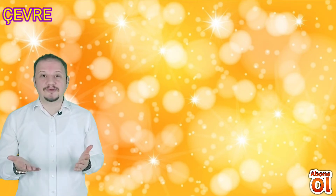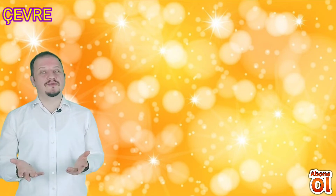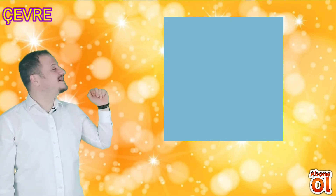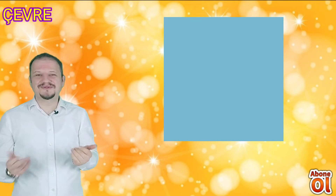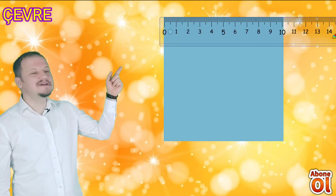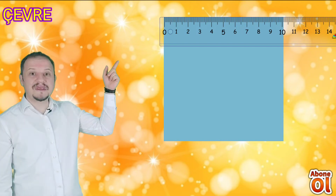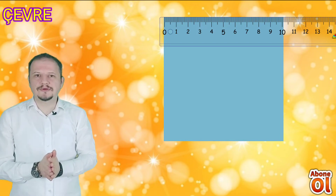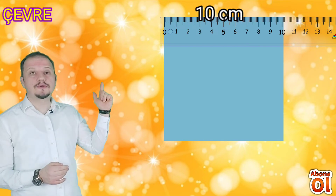Şimdi sizlerle beraber başka bir karenin kenarlarının uzunluklarını cetvel yardımıyla ölçelim. Kaç santimetre olduğunu bulalım ve daha sonrasında çevresinin ne kadar uzunluğa sahip olduğunu hep birlikte bulalım. Bakın karemiz geldi, dört köşesi ve dört kenarı var. Cetvelimizle nasıl ölçeceğiz? Bir köşesini cetvelimizin sıfır noktasına getiriyoruz. Diğer köşesi kaç santimetreyi gösteriyorsa bu kenarın uzunluğu o kadardır. Evet, tam 10 santimetre olduğunu görüyoruz.